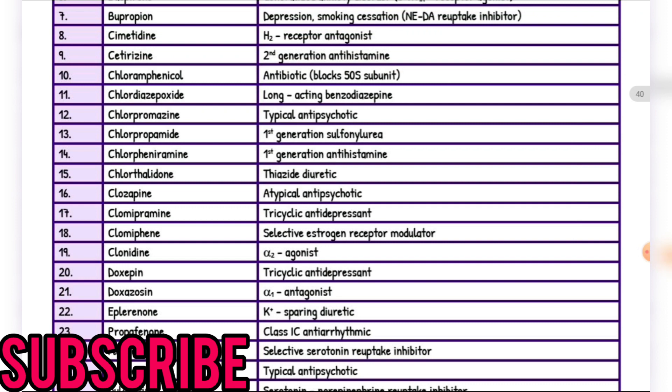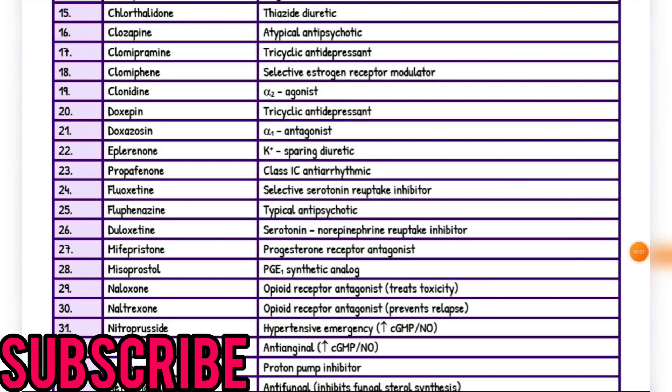Cetirizine: second-generation antihistamine. Chloramphenicol: antibiotic. Chlordiazepoxide: long-acting benzodiazepine. Chlorpromazine: typical antipsychotic. Chlorpropamide: first-generation sulfonylurea. Chlorpheniramine: first-generation antihistamine. Chlorthalidone: thiazide diuretic. Clozapine: atypical antipsychotic. Clomipramine: tricyclic antidepressant.